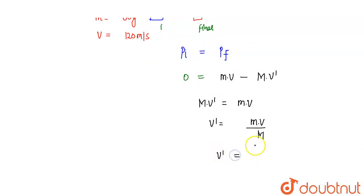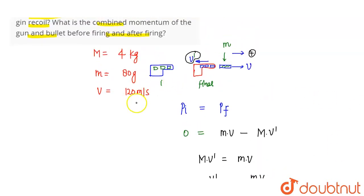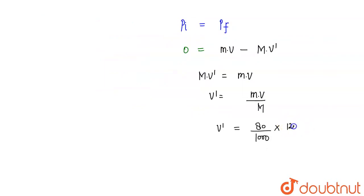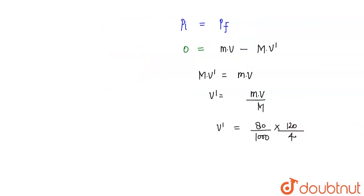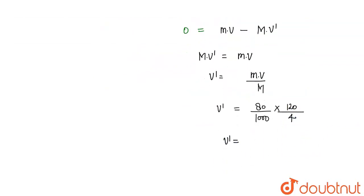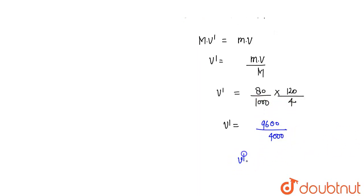M into v-dash equal to small m into v. Agar aap v-dash ki value calculate karo toh v-dash = m × v divided by capital M. Mass of the bullet 80 gram given hai — 80 divided by 1000 kg — aur velocity of the bullet 120 m/s, divided by mass of the gun 4 kg. Solve karne par require speed of the gun = 2.4 meter per second.